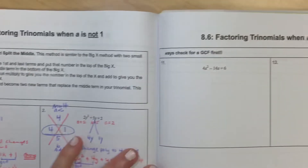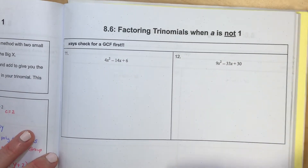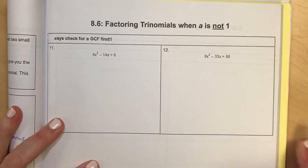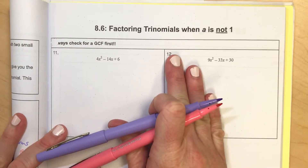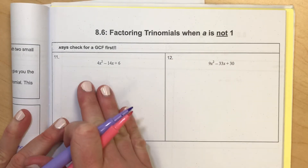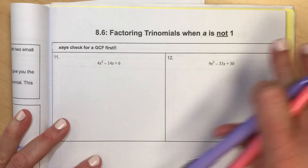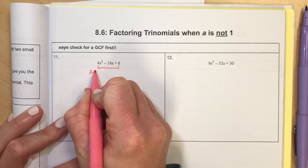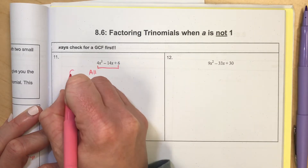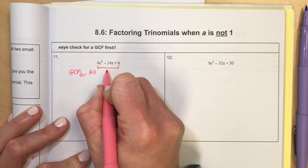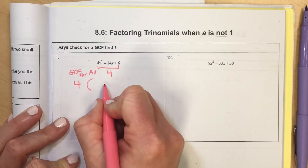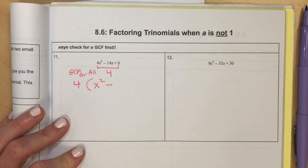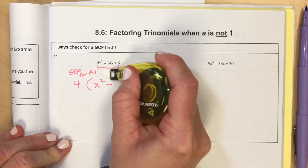These next two examples have a GCF first. Always check from the beginning whether you can factor out a GCF. I notice the three terms are all divisible by... actually, not 4 — 14 is not divisible by 4. Let's try 2 instead. It's good that you can see I make mistakes too.